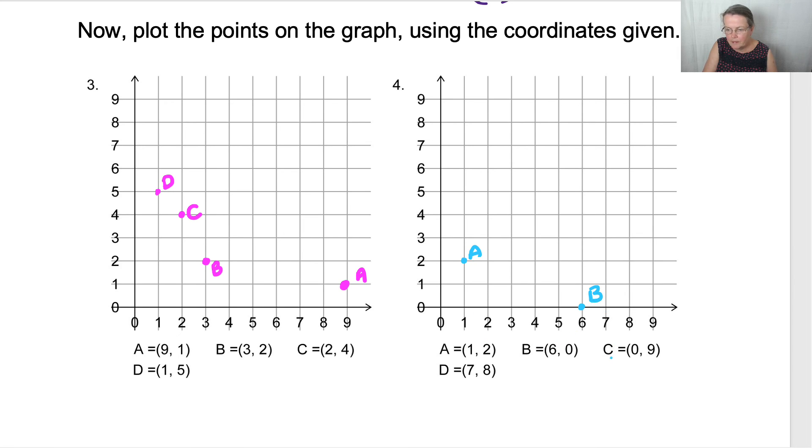B. C is nought, nine. So it goes along nought, it goes across absolutely nothing, but it goes up nine. So here it arrives at nine. And that's, let's put our little label C.